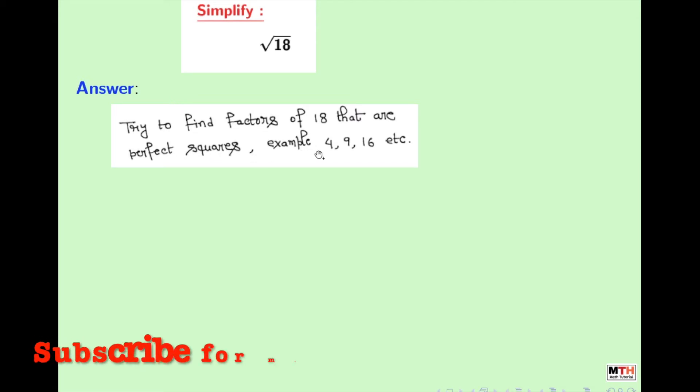As for example, 4, 9, 16, etc. So we will write 18 as equal to 9 times 2, because here 9 is a perfect square which is the square of 3. Now we will take square root on both sides.